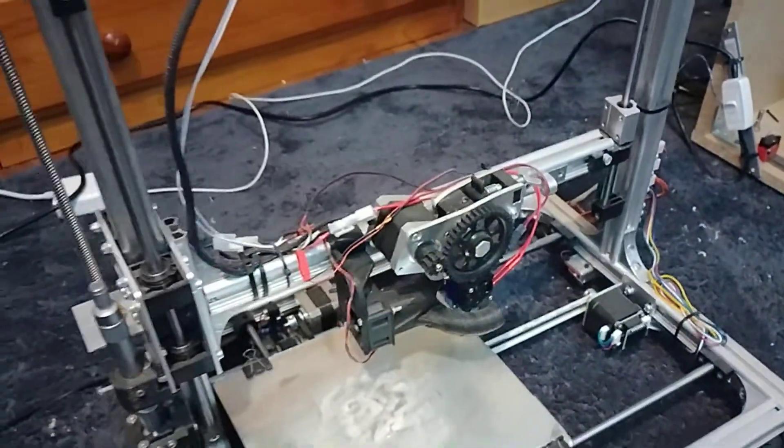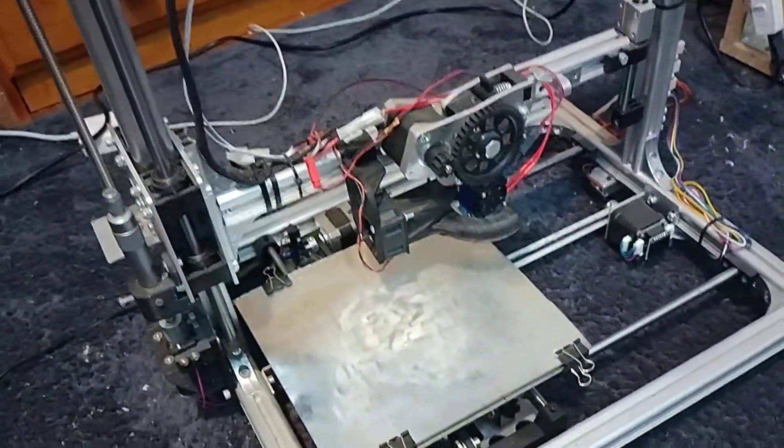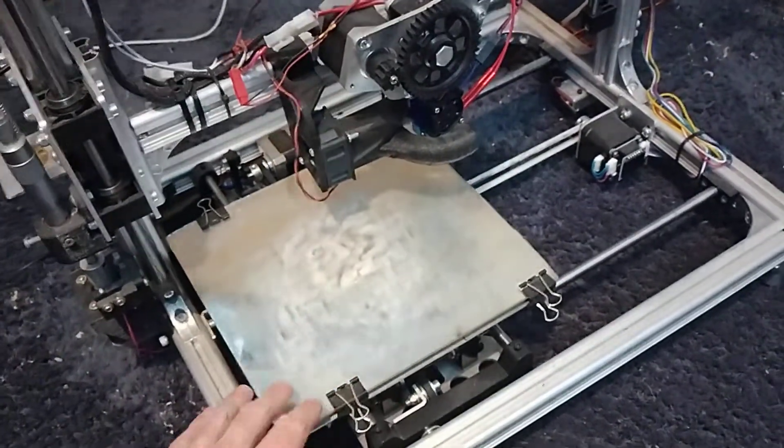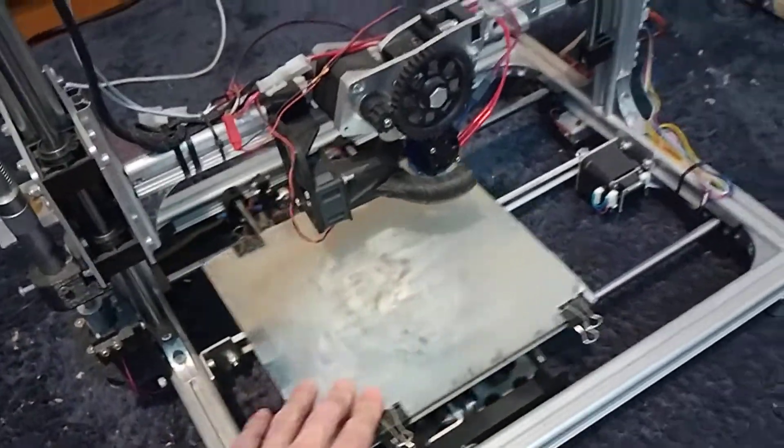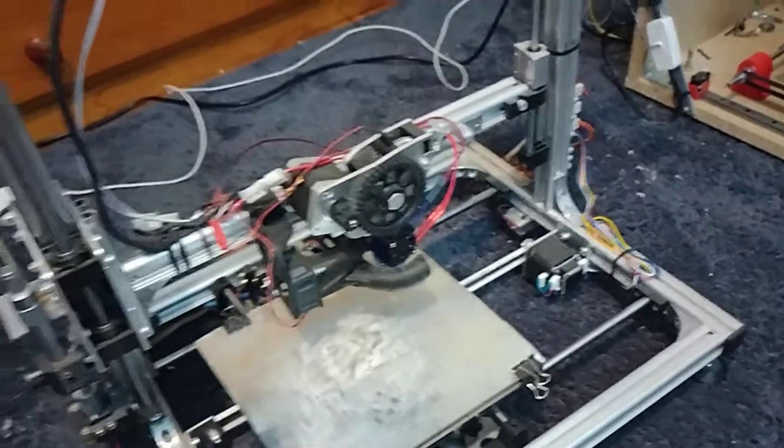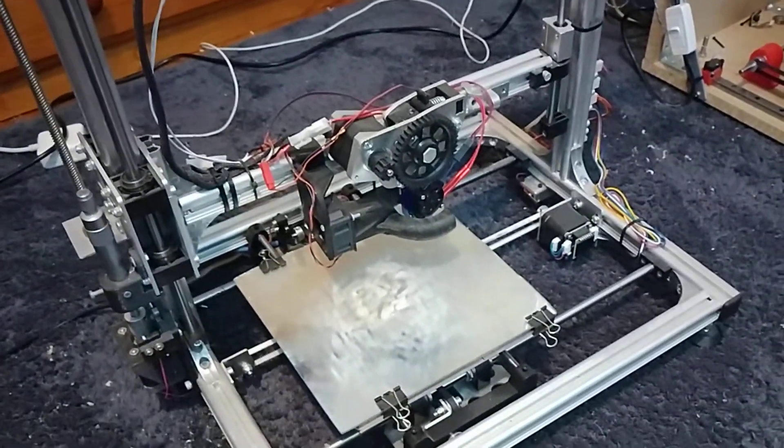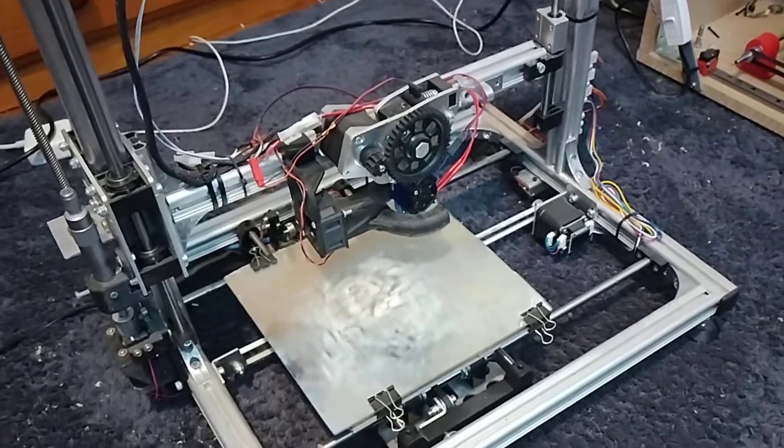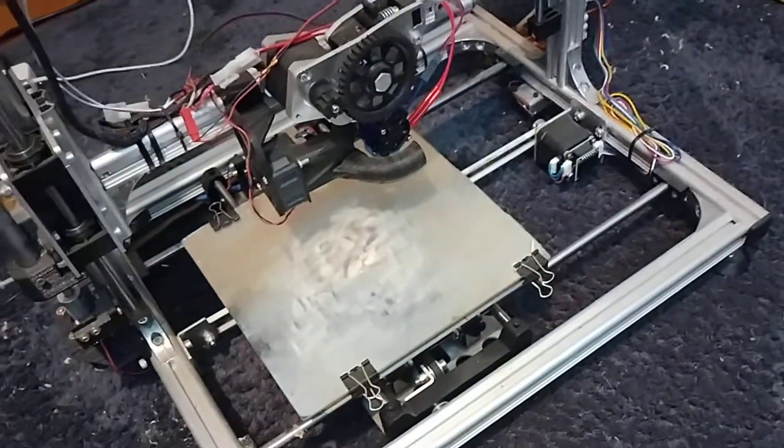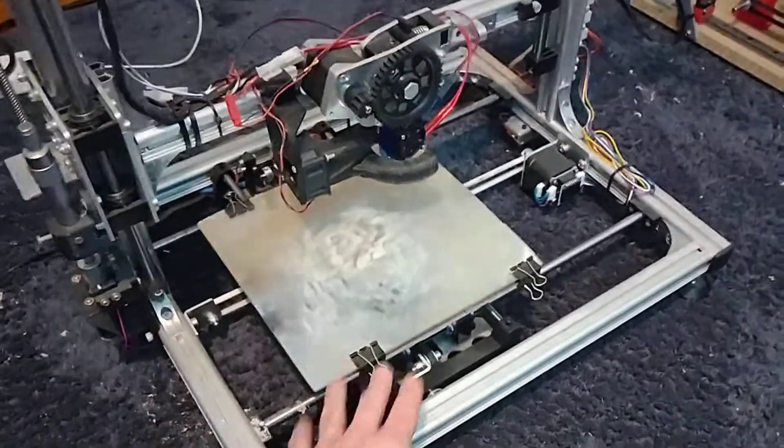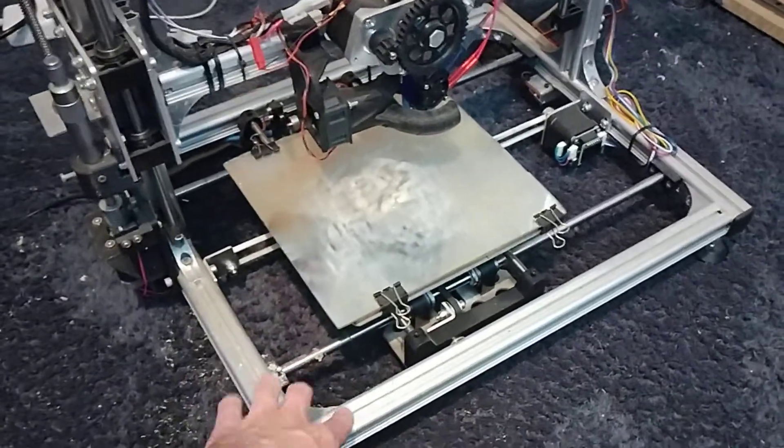So I just wanted to do a video of the old K8200 printer that Simon and myself purchased together and built together before I disassemble it because I'm going to use the parts for something called a Fusebox 2, which is a CoreXY printer, and I'll surprisingly be able to use a lot of parts from this.